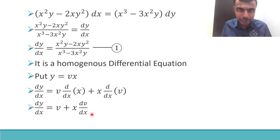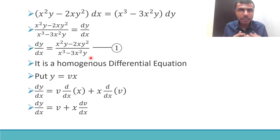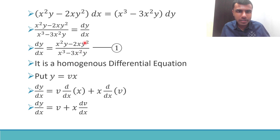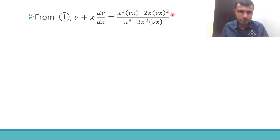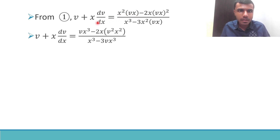Now in equation (1), in place of dy/dx I put v plus x·dv/dx. Next, wherever you see y in this equation — here there is y, here there is y² — in place of y put vx. So y² becomes vx whole squared, and x² times y becomes x² times vx, giving x² times x which is x³, so I get vx³.